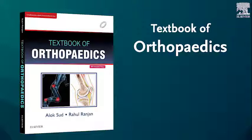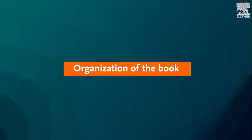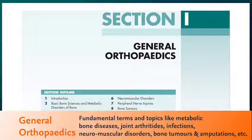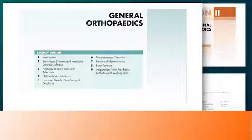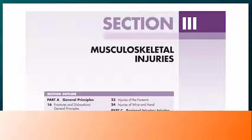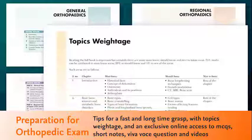Medinact Textbook of Orthopedics is a perfect go-to text covering the entire course content in an easy to understand and concise manner. The book is divided into four parts: the first section is general orthopedics, covering fundamental terms and topics related to various diseases, disorders, and bone tumors. The next section is regional orthopedics, detailing clinical examination and affections at each joint or region. The third section comprises musculoskeletal injuries, including general principles, complications, and management related to regional injuries.